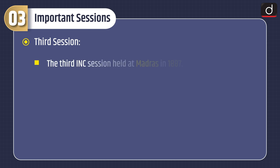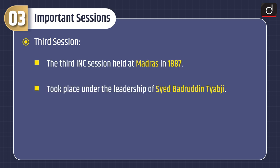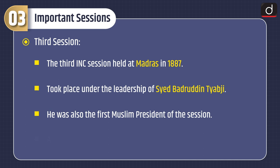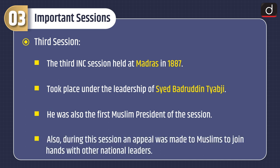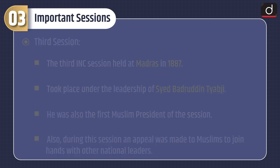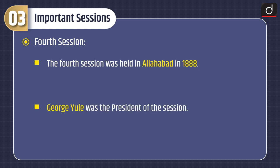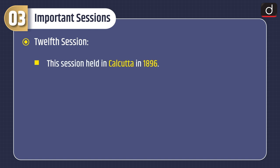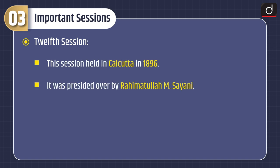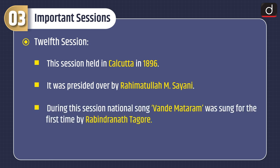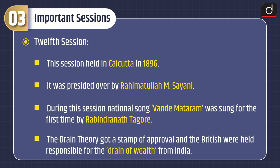Third Session: The third INC session was held at Madras in 1887. It took place under the leadership of Sayyad Badruddin Tyabji. He was also the first Muslim president of the session. During this session, an appeal was made to Muslims to join hands with other national leaders. Fourth Session: The fourth session was held in Allahabad in 1888. George Yule was the president of the session and he was also the first English president. Twelfth Session: This session was held in Calcutta in 1896. It was presided over by Rahimatullah M. Sayani. During this session, national song Vande Mataram was sung for the first time by Rabindranath Tagore. The drain theory got a stamp of approval and the British were held responsible for the drain of wealth from India.